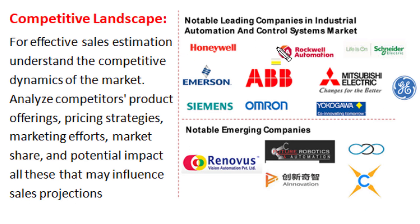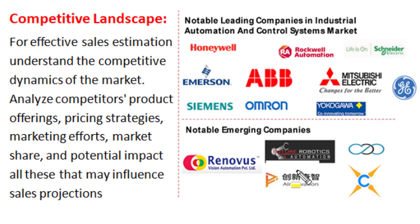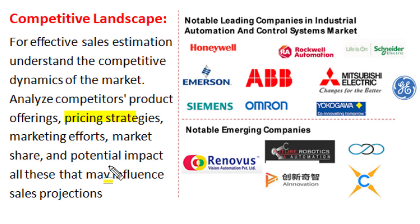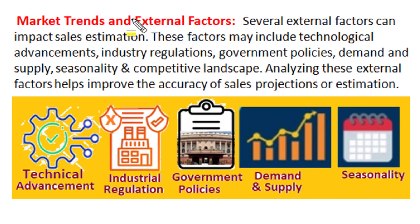For example, for the industrial automation and control system market, Honeywell, Rockwell Automation, Siemens, ABB, Mitsubishi Electric, General Electric, and Yokogawa are leading notable companies having significant market share. And there are some new emerging companies with innovative products and better pricing strategies. For effective sales forecasting, we must analyze what competitor products are offering, their pricing strategies, their marketing efforts, their market share, and what the potential impact of these competitors would be on our sales, so as to get accurate sales projections and strategies for our company.